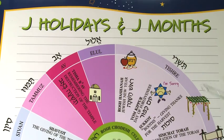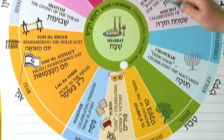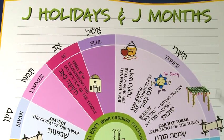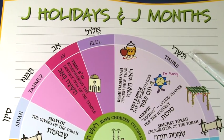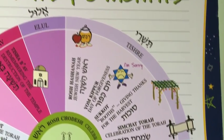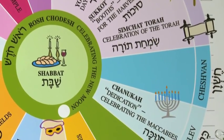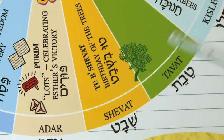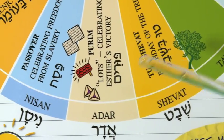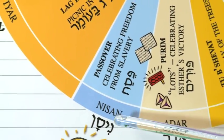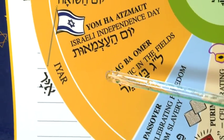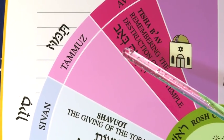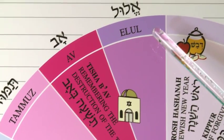So here we have a big, giant circle, and in the circle are the holidays that fall within the Jewish months of the year. We begin with Tishrei, and then we move to Cheshvan. We have Kislev, and Tevet, and Shvat, Adar, and Nisan, Iyar, and Sivan, Tammuz, Av, and Elul.